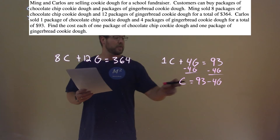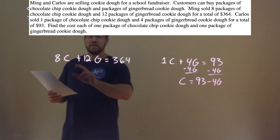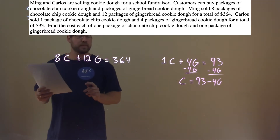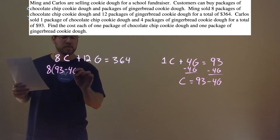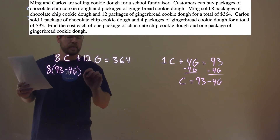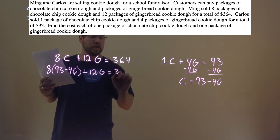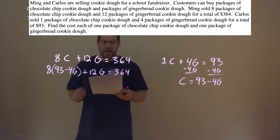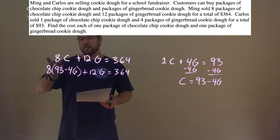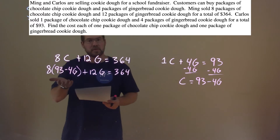What I'm going to do with that is take this value of 93 minus 4G and plug it in for that C. So we have 8 times (93 minus 4G) plus 12G equals 364. And now I have an equation with just the variable G, so let's solve for G.